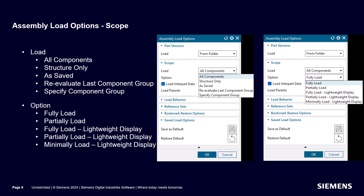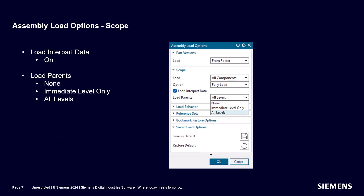If you're wave linking or promoting in your IPART, I recommend selecting fully load. Load inner part data is important to have on for the same reason — if you're wave linking or promoting in your IPART, this is inner part data and needs to be loaded at all levels.